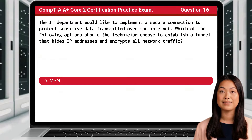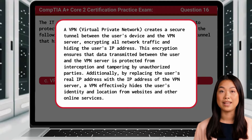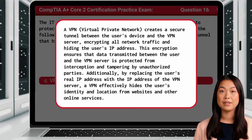The answer is C: VPN. A VPN creates a secure tunnel between the user's device and the VPN server, encrypting all network traffic and hiding the user's IP address. This encryption ensures that data transmitted between the user and the VPN server is protected from interception and tampering by unauthorized parties.